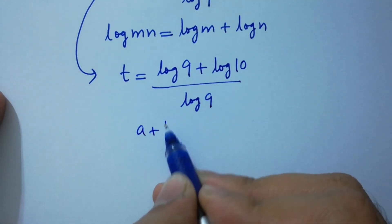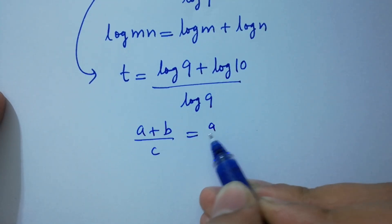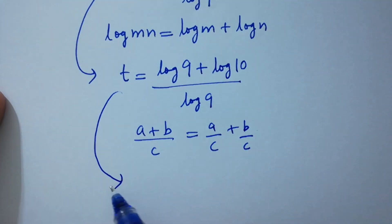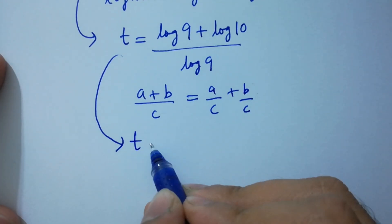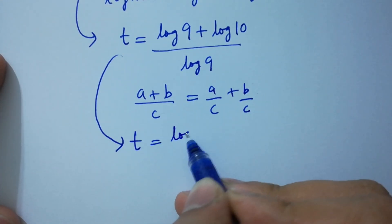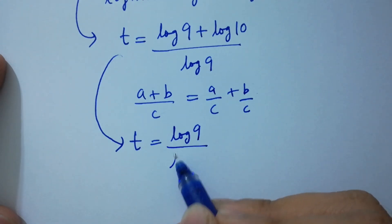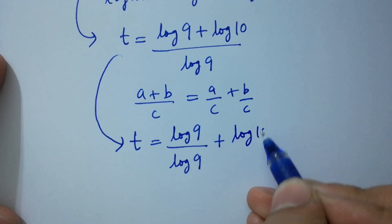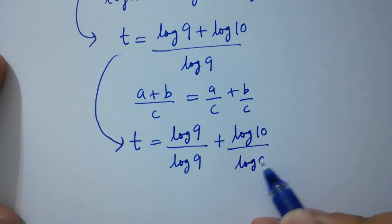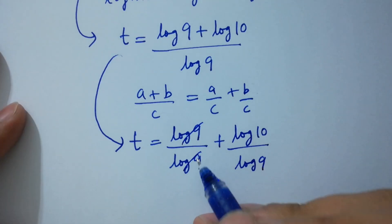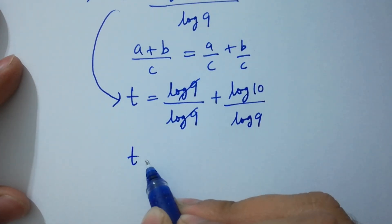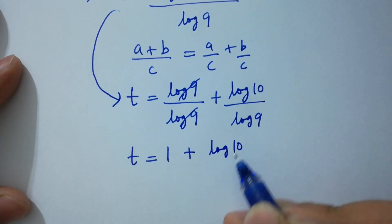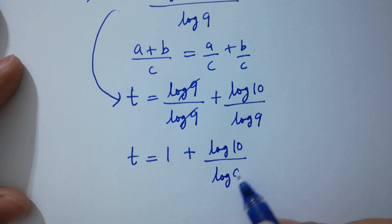Since a plus b over c equals a over c plus b over c, we get t equal to log 9 over log 9 plus log 10 over log 9. Log 9 and log 9 cancel, so t equals 1 plus log 10 over log 9.